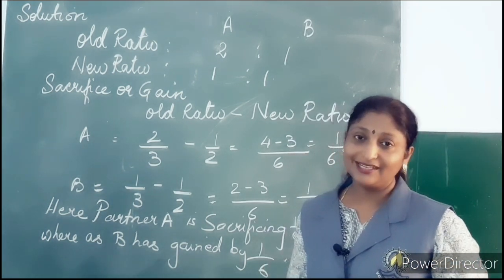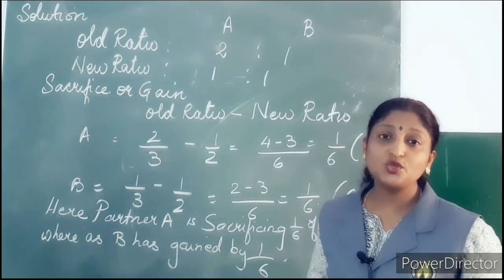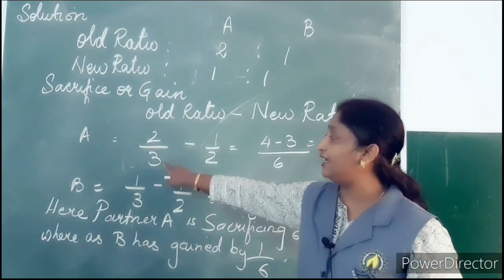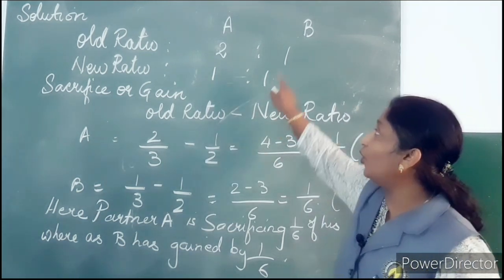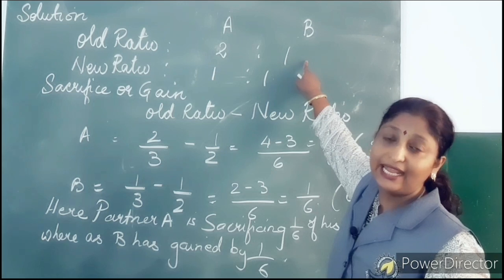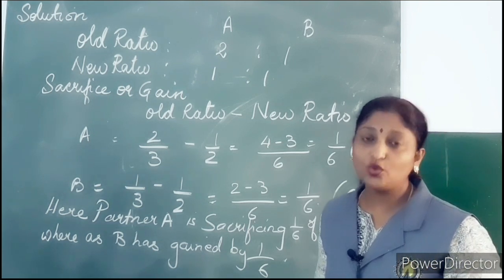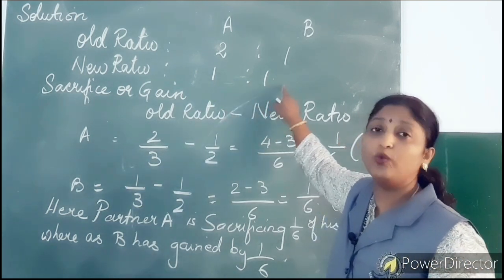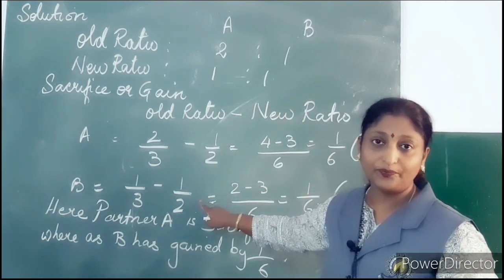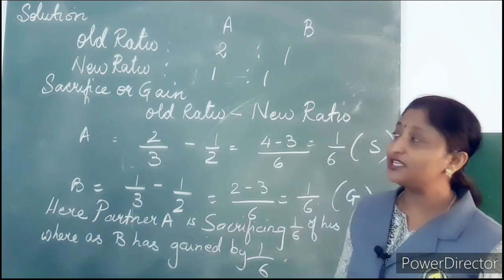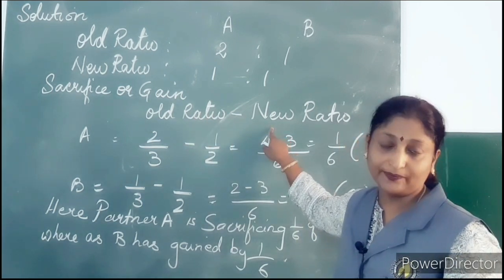A and B are 2 partners and their old ratio is 2 is to 1. 2 is to 1 means 2 upon 3 and 1 upon 3. So 2 is to 1 is the old ratio of partners A and B. The new ratio — they will divide equally, meaning 1 is to 1, which means 1 by 2 and 1 by 2.